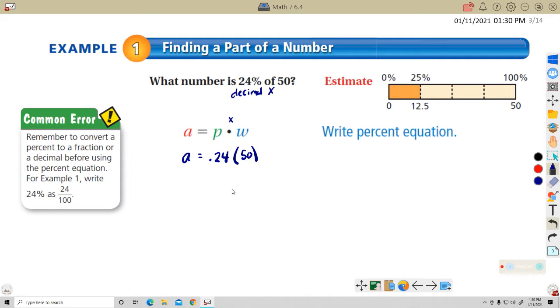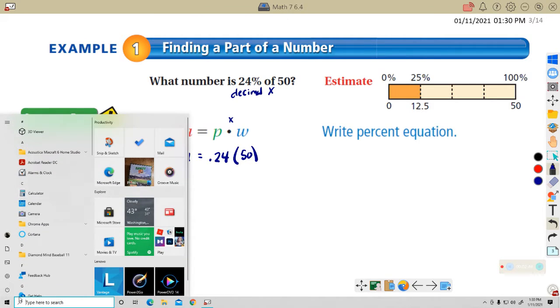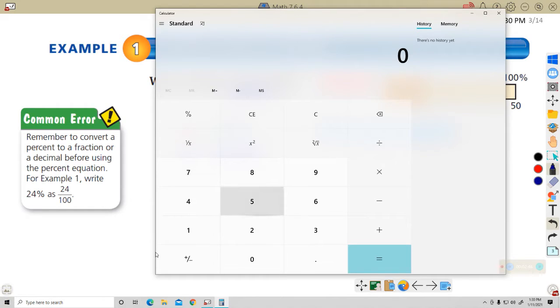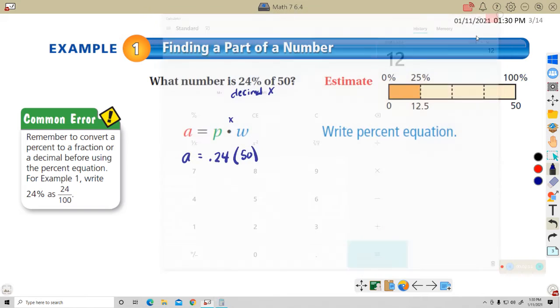This one is pretty straightforward. All we have to do is multiply 0.24 times 50. 0.24 times 50 gets 12. So 12 equals 24% of 50. I wrote that backwards—A equals 12, because multiplying those two things together gives me 12.